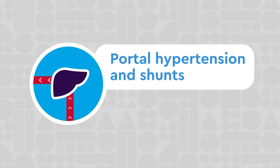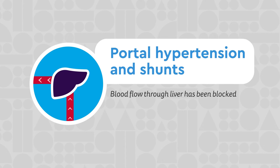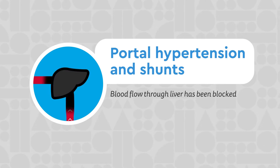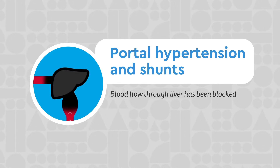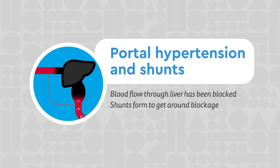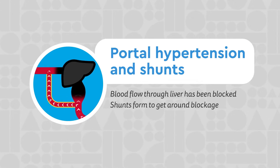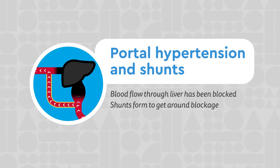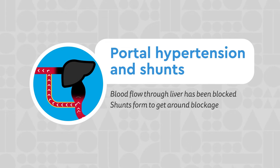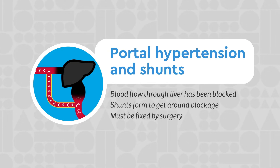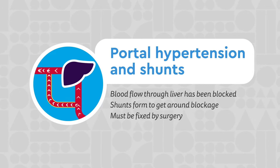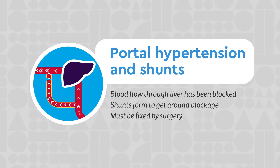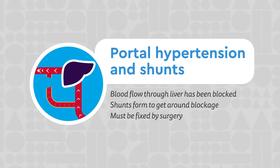Portal hypertension is a sign that the blood flow through the liver has been blocked. New pathways form, called shunts, to get around the blockage. The blockage must be fixed by surgery, and the shunts must be closed off as well, to return normal blood flow to the liver.